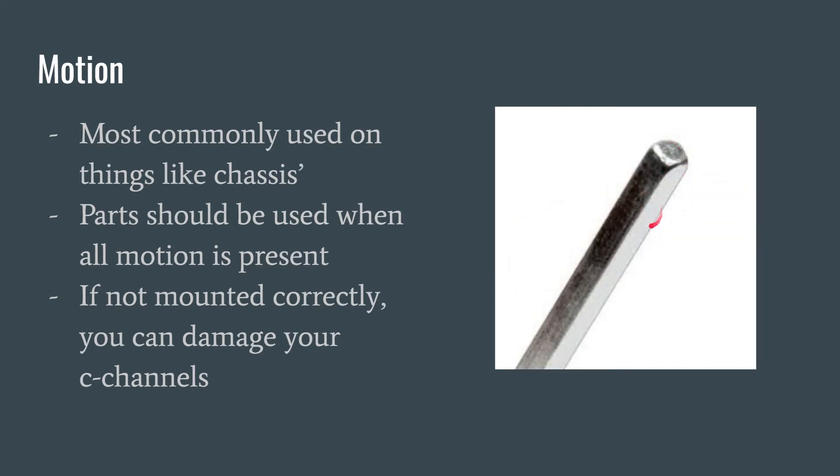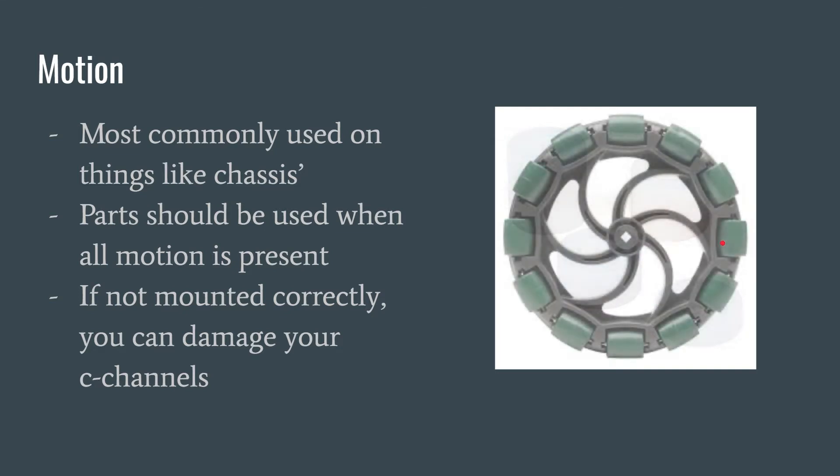This is the axle that will go through that bearing flat, and that's just something to put your spacers, your gears and your wheels on. These are some spacers. They are the nylon spacers and you'll use these to make sure that your gears are lined up. And then you have wheels. Obviously, there's more than just the omni wheels, but the wheels also go on the shaft. As you can see, there's that little square hole right there.